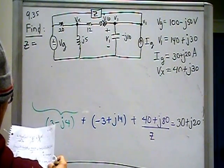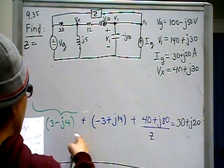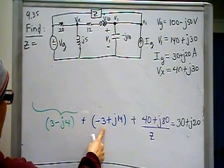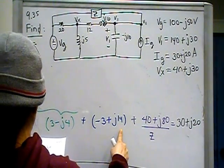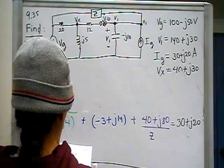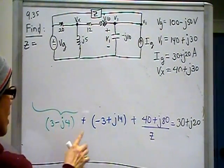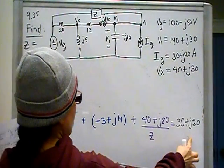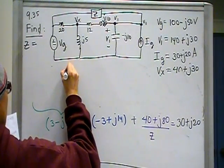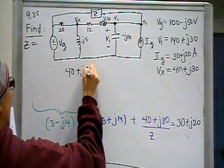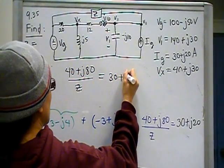This reduces to, well, this reduces to, the 3s go away and this becomes j10. So this is j10. And then you subtract j10 from both sides. This is plus j10, so minus j10 and minus j10 would give me 30 plus j10. So my new equation is 40 plus j80 over z is equal to 30 plus j10.